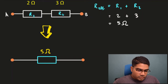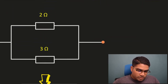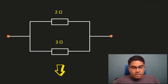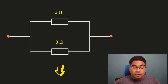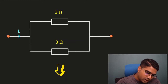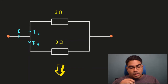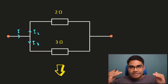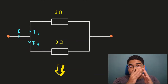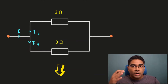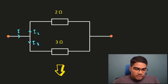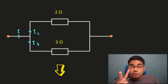Now let's look at the parallel circuit. When we are dealing with a parallel circuit like this, you can see it is a parallel circuit because when the current comes in, it is going to split into two parts, so we will have two different currents. When the current splits, it is a parallel circuit.